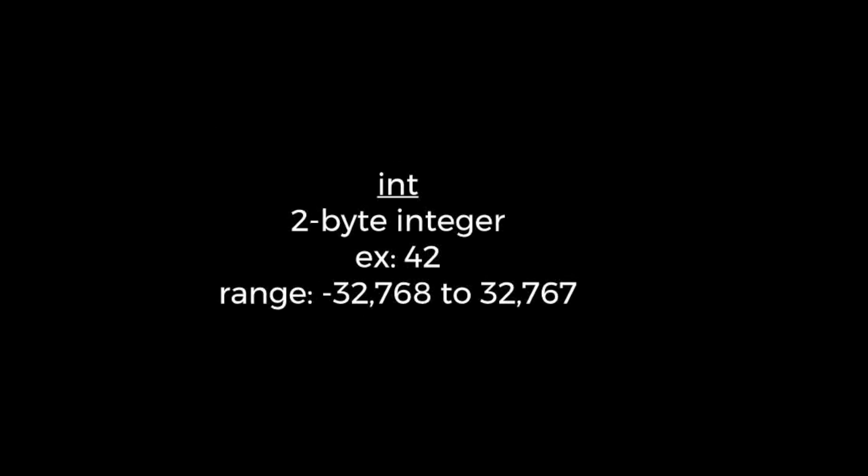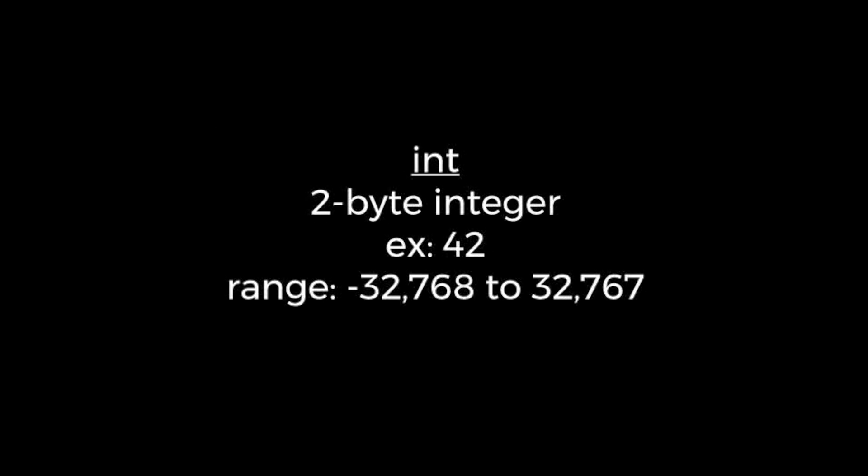The first fundamental type, integer, is abbreviated int, and it indicates that the data can be negative or positive integers, and zero. On basic Arduinos, like the UNO and RED board, the int type takes up two bytes in memory and can be a number between negative 32,768 to 32,767.